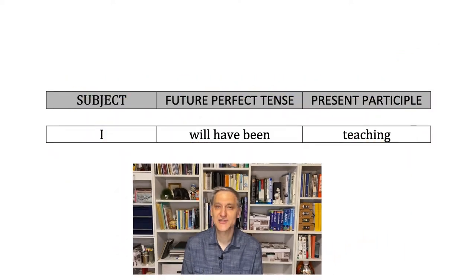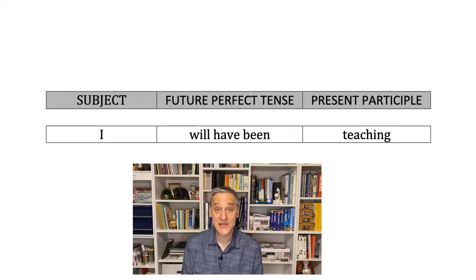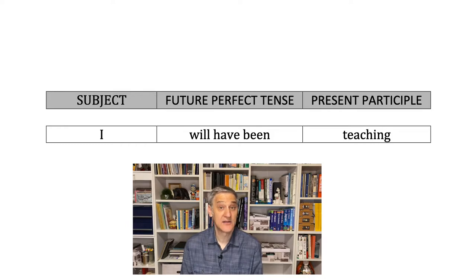Here is a chart that should make it easier for you to understand. We have the subject, plus 'will have been,' plus the present participle. Now let's add the time — this is the duration or length of time that you want to talk about. So in my case: will have been teaching for 28 years.